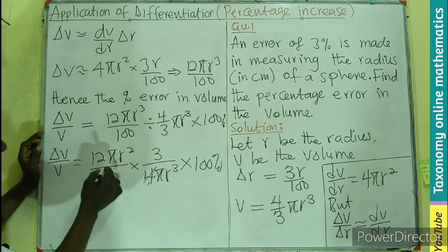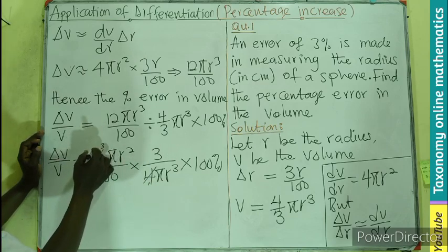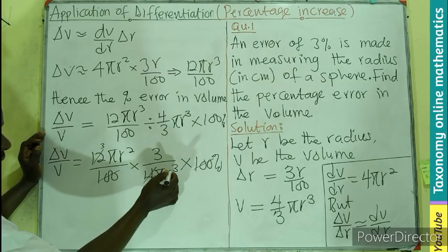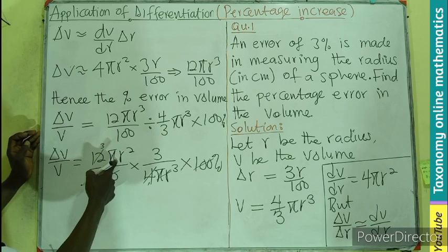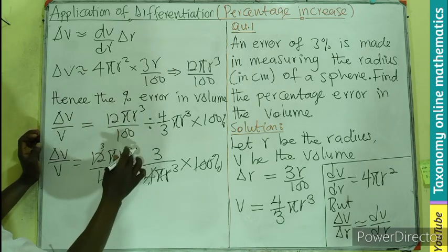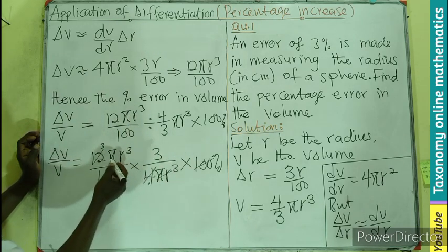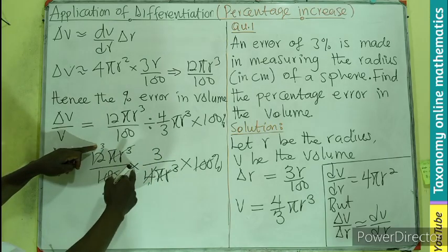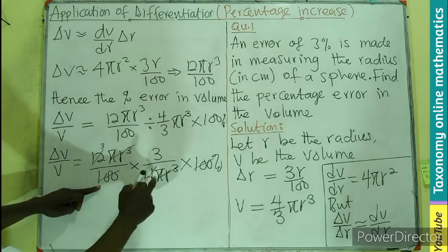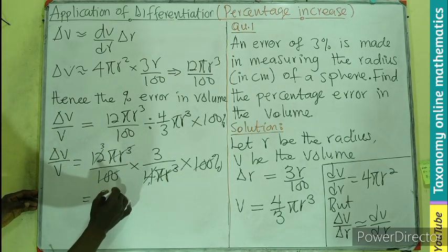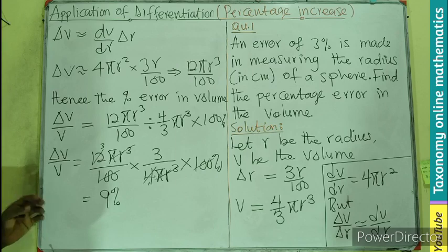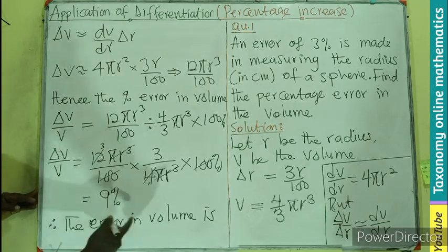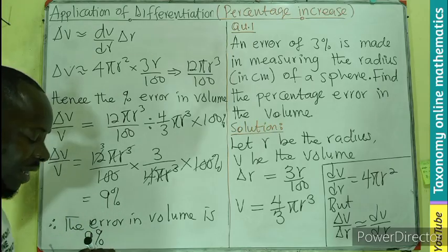Let's see what is happening here. 4 can go here, 100 can go here and go here, pi r cubed cancels. So we are left with only 3 times 3 over 1, that will be giving us 9%. So therefore, the error in volume is going to be 9%.